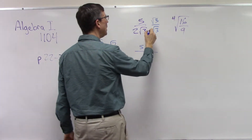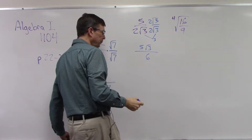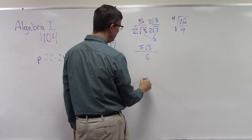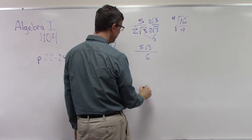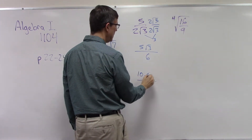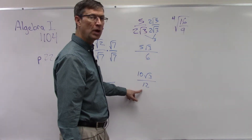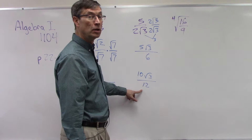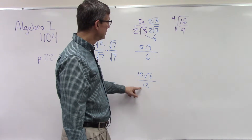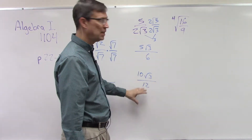Now what if you accidentally multiplied by the entire denominator, 2 square root of 3? I'll leave this here so you can compare. The 2 times 2 would be 4, times the 3 would be 12, and on the top we would have 10 square root of 3. But then you'd notice that 10 and 12 can be reduced — divide both by 2 and get 5 over 6. So we get the same answer. It's okay if you do that; you'll just have one extra simplification step at the end — no big deal.